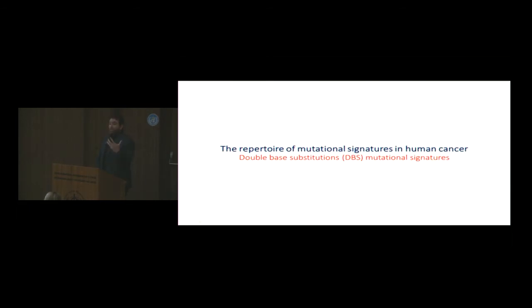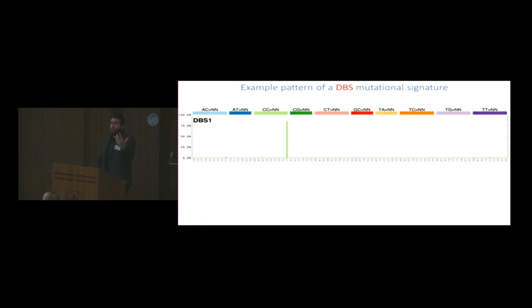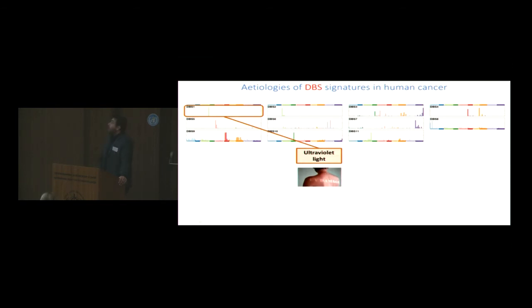For 10 out of the 17 signatures, we had no idea what causes them. Switching to the next set of signatures, the double-base substitution. This is just another type to classify things. These are mutations that co-occur. Instead of having a single-base mutation, you have a double-base mutation. So you have CC mutating to TT adjacent to each other in a single event. We were able to classify 78 possible double-base, possible mutations for double-bases. You can see one of the signatures. It's almost exclusively CC to TT. That's exactly what one would expect from UV light exposure.